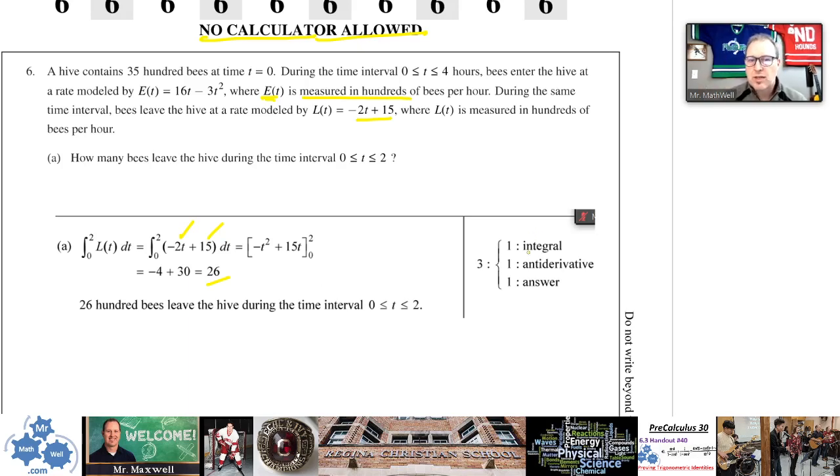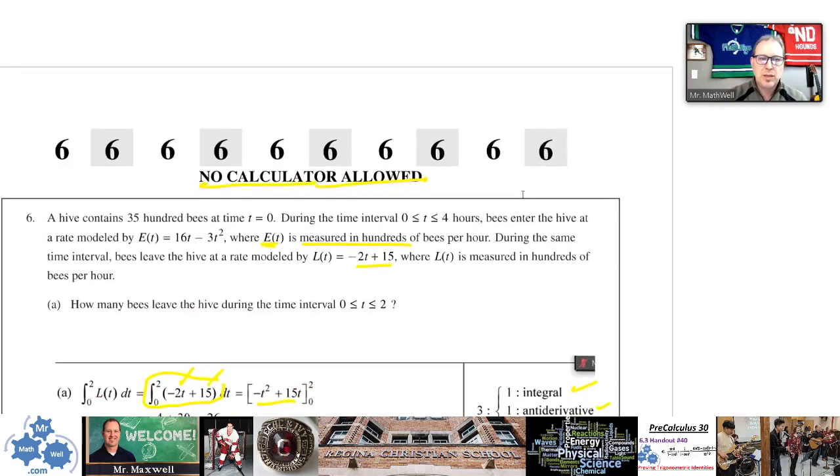You will have to make sure that you remember that it's not just 26 bees, it's 26 hundred. It says the rates are measured in hundreds of bees per hour, so 2600 bees, that's the answer for A. Please note, you get one mark for the correct integral here, including the dt. You get one mark for finding the anti-derivative and you get one mark for the answer here and stating the answer.